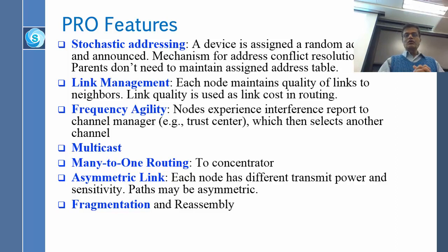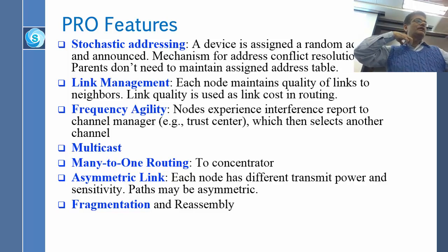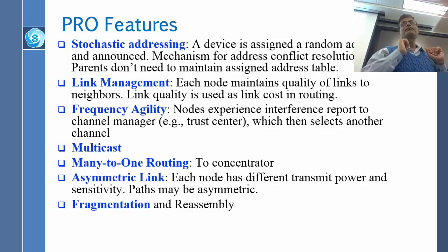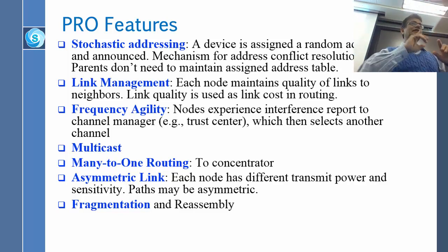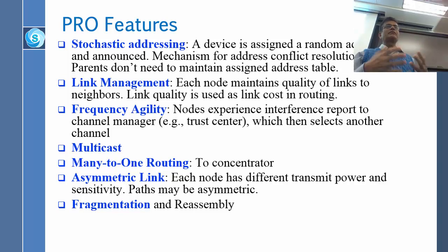Link management: each node maintains the quality of links to its neighbors. Link quality is used as the link cost in routing. If a link is not very good, it will have a high cost; if the link is good, it will have a low cost. Every node knows the link quality of every link and announces it so everybody knows which links are good or bad.